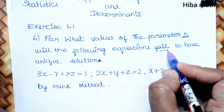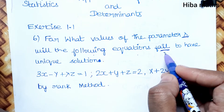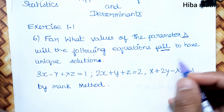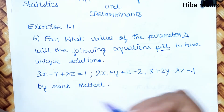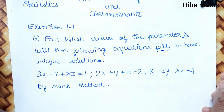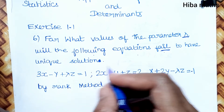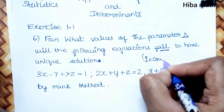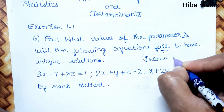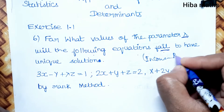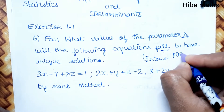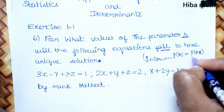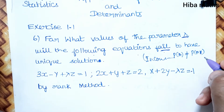The question asks when the system fails to have a unique solution. The system is inconsistent when the rank of A and the rank of the augmented matrix [A|B] are not equal.